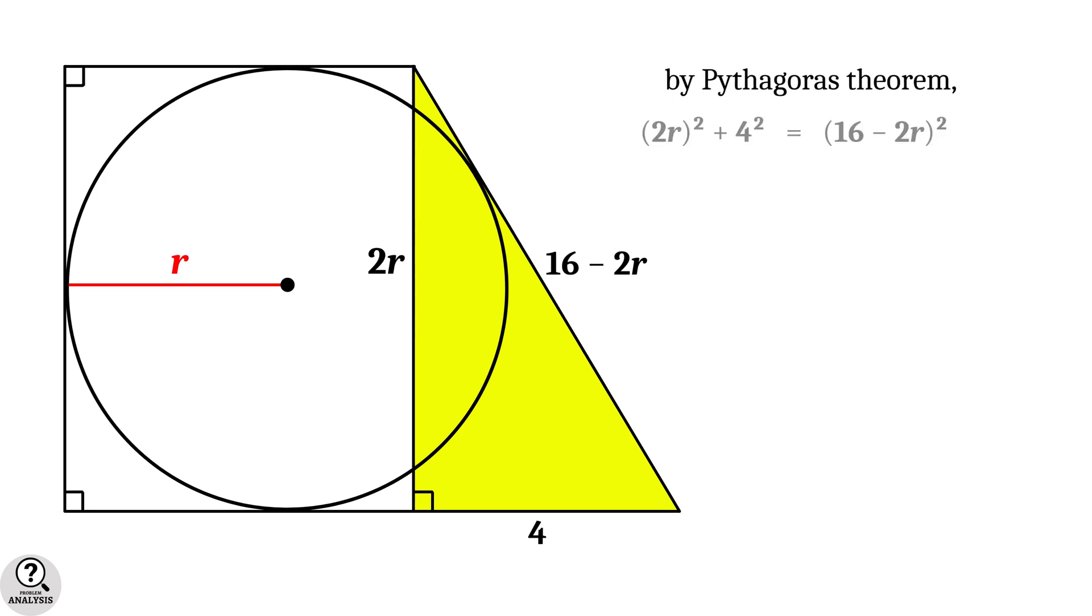It gives 2r whole square plus 4 square equal to 16 minus 2r whole square. That is, 4r square plus 16 equal to 256 minus 64r plus 4r square. The term 4r square is cancelled out. And we get 64r equal to 256 minus 16 equal to 240.